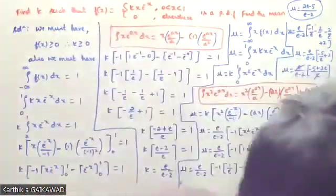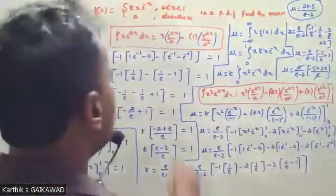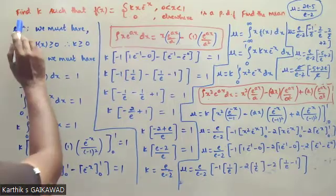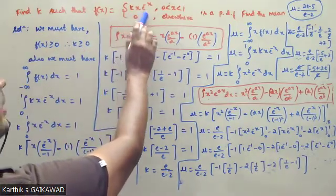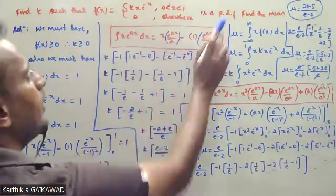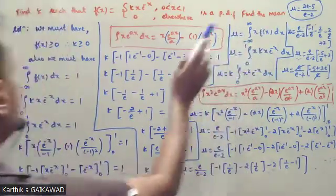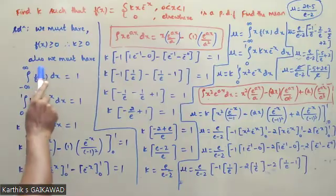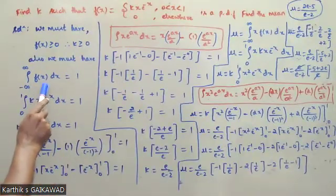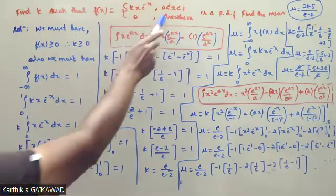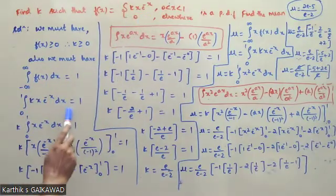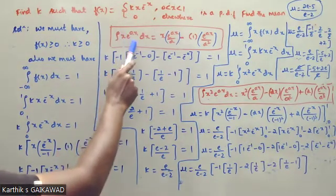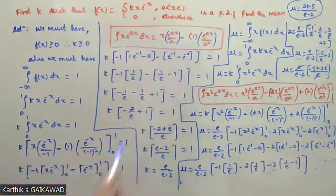Recap: f(x) = kx·e^(-x) for x in [0,1], 0 elsewhere, is a PDF. First condition: f(x) ≥ 0, so k ≥ 0. Second condition: integral from minus infinity to infinity of f(x) dx equals 1, so integral from 0 to 1 of kx·e^(-x) dx equals 1. Using the formula for integral of x·e^(ax) dx: x·e^(ax)/a minus e^(ax)/a².